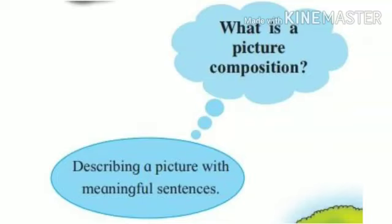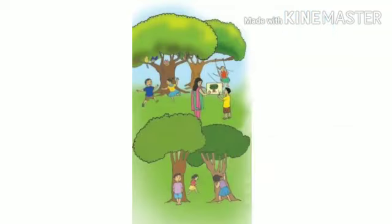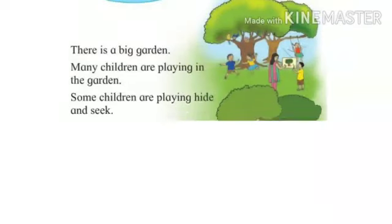Children, as you can see, a picture is given in the lesson. By looking at the picture, we all come to know that this is a picture of a garden. So, let's describe the picture more.